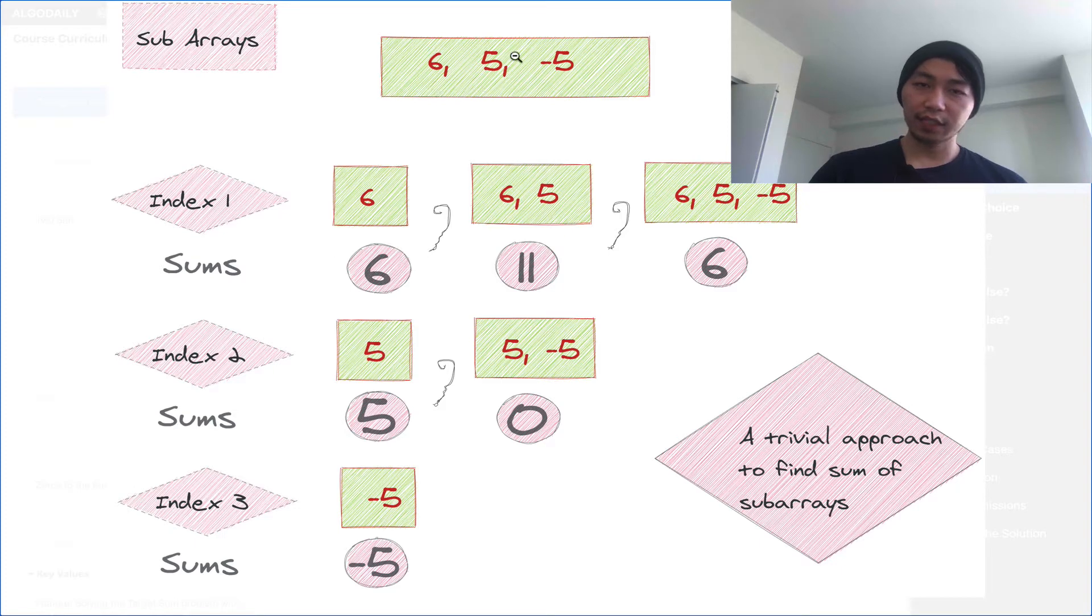And we see that it doesn't equal 15. So then we move on to the next possible subarray, which is 6 and then 5. And 6 and 5 sums up to 11, and that doesn't equal 15. Then 6, 5, and negative 5 sums up to 6, and it doesn't equal 15.